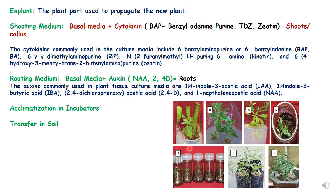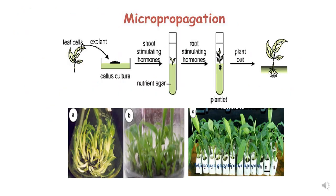After acclimatization or hardening, the plants are transferred to soil. In these pictures, you can see plants growing in jam bottles and then transferred to soil growing in a pot. The explant first gives rise to shoots, then to roots, then acclimatization and hardening in incubators, and finally transfer to soil. This is the whole method of growing a plant in artificial tissue culture medium.